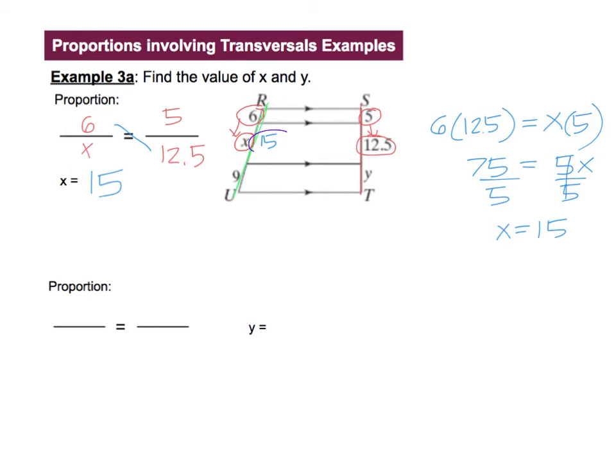For the Y, I am going to go like this. So the 15 and the 9 can go together. So 15 over 9 equals 12.5 over Y. And now you can solve it with your cross product. 15 times Y equals 12.5 times 9.